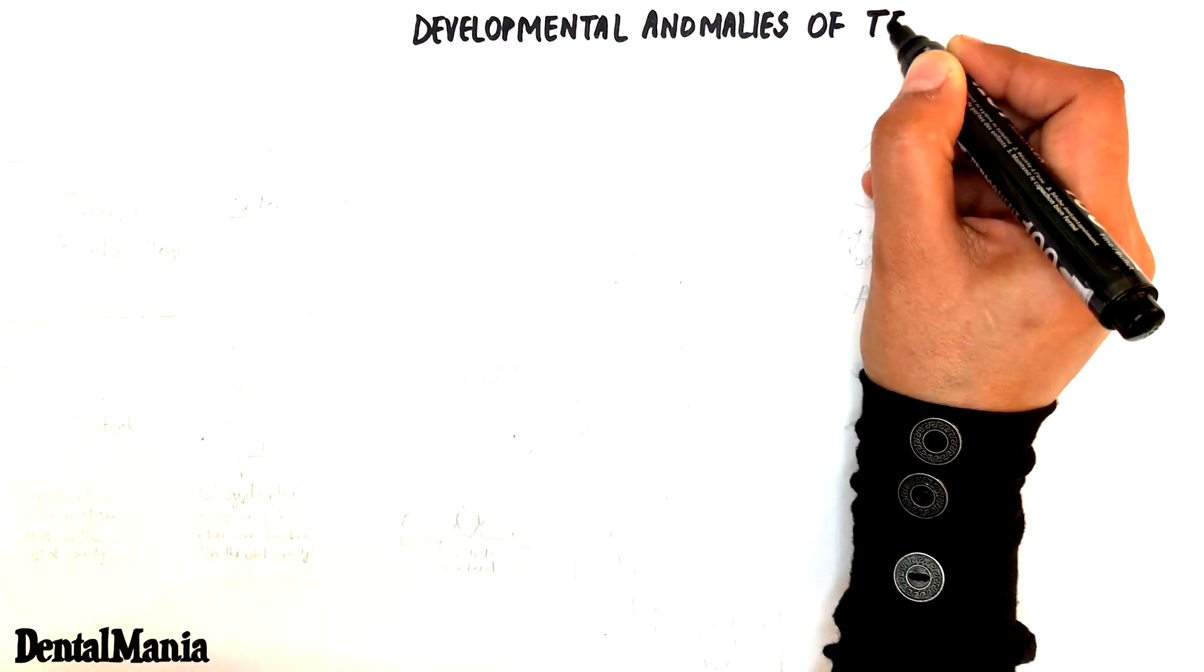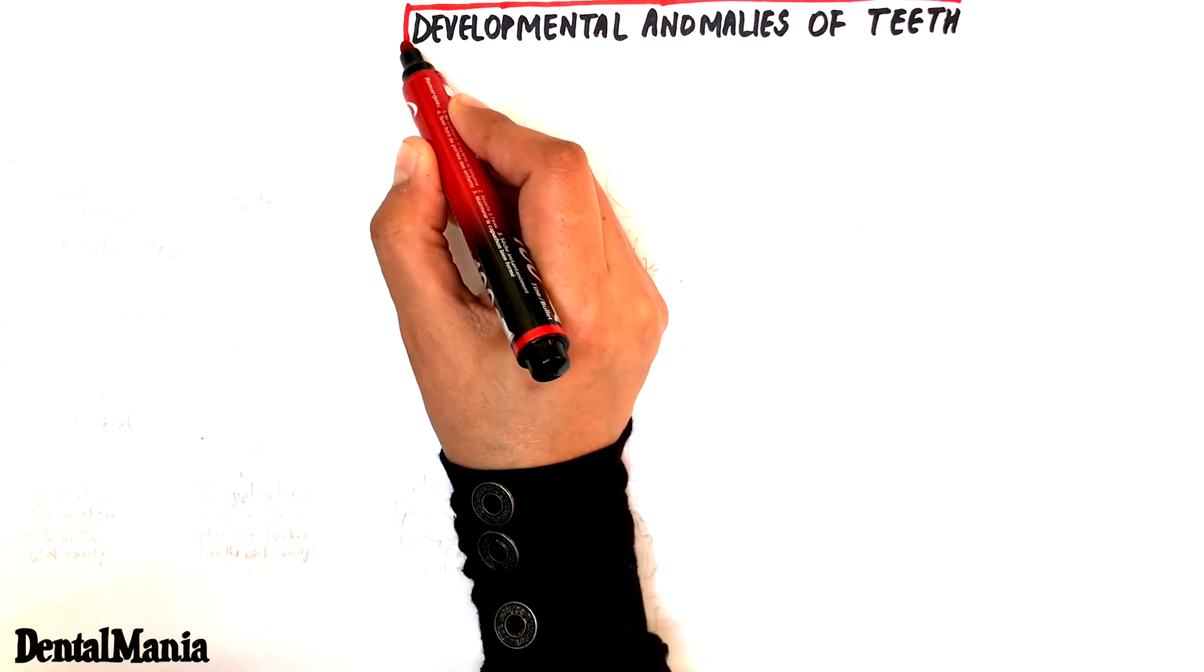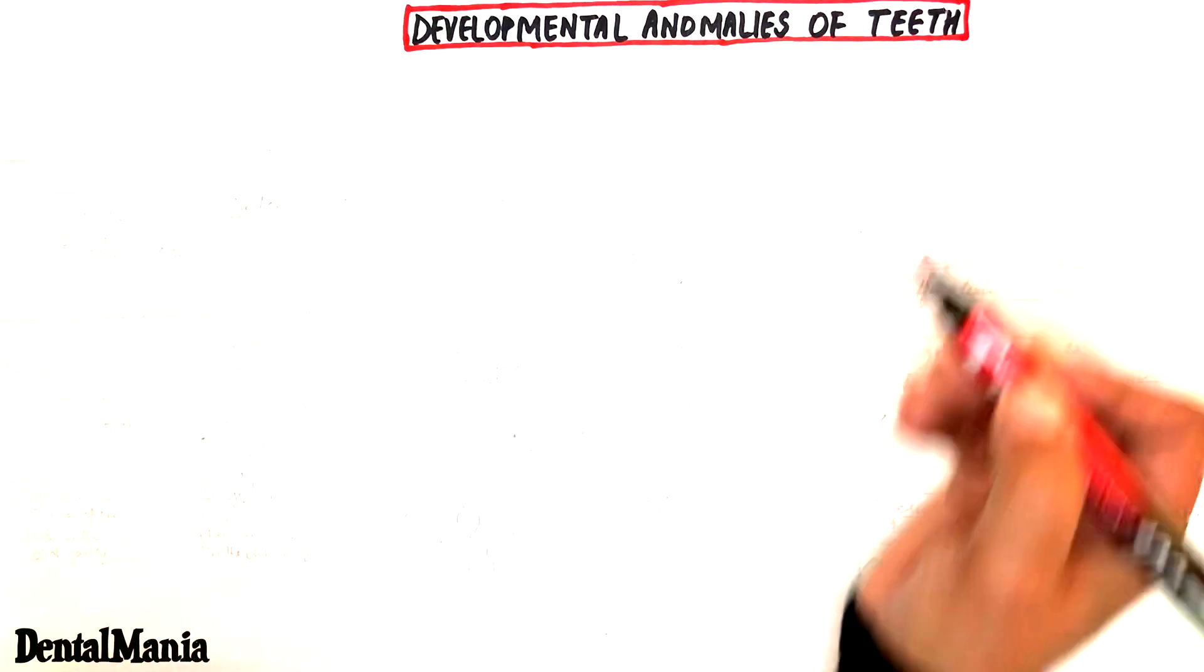The developmental anomalies of the teeth are the abnormalities that arise during the developmental stages of the tooth. In order to have an understanding of these anomalies, let's do a very quick review of the developmental stages of the tooth.